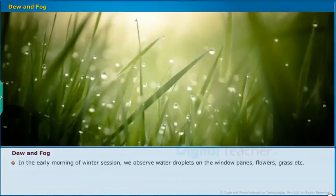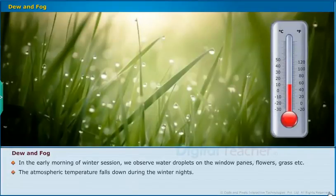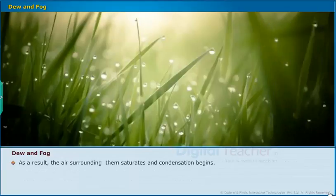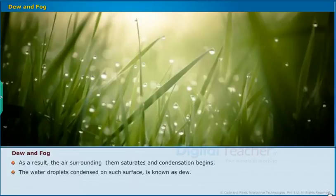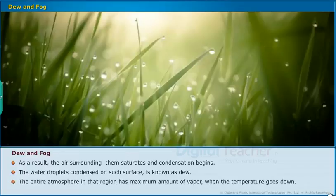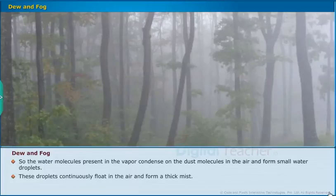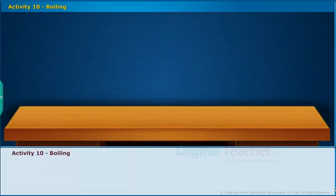Dew and Fog: In the early morning of winter season, we observe water droplets on window panes, floors, grass, etc. The atmospheric temperature falls during winter nights. The surface of window panes, floor, grass, etc. becomes colder, and as a result the air surrounding them saturates and condensation begins. The water droplets condensed on such surfaces are known as dew. When the entire atmosphere has the maximum amount of vapor and the temperature goes down, water molecules in vapor condense on dust molecules in the air and form small water droplets. These droplets float continuously in the air and form a thick mist called fog, which restricts visibility.